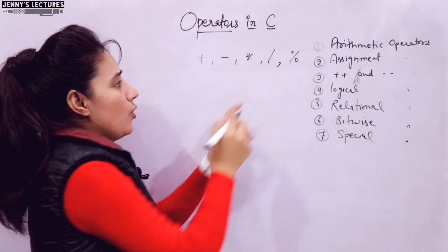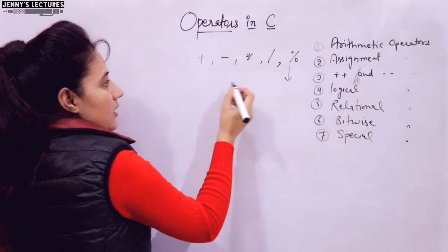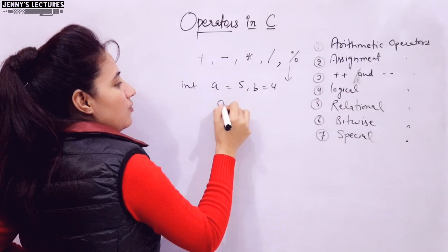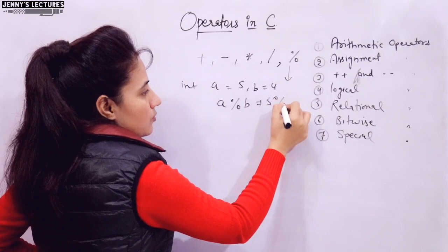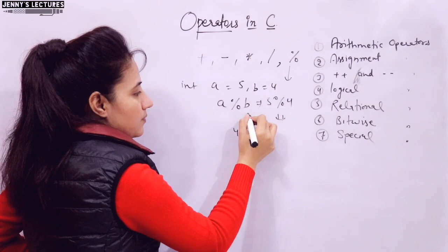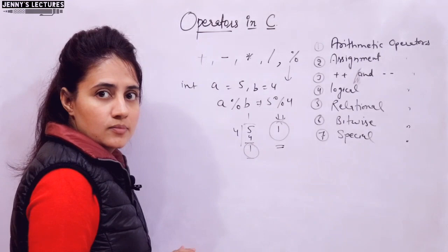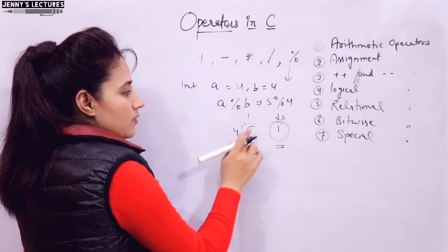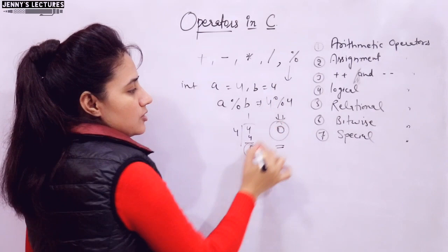But what is the modulo operator? It gives you the remainder. For example, if A is equal to 5 and B is equal to 4, then A mod B gives 5 mod 4. If you divide 5 by 4, the remainder is 1, so it will give you 1. If it is 4 mod 4, the remainder is 0, so it will give you 0. That is the modulo operator.